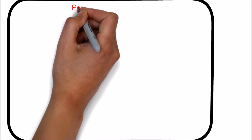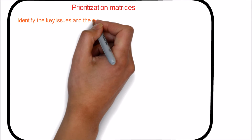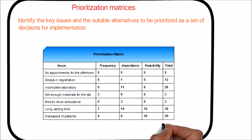Next technique is Prioritized Matrices. This technique is used to identify the key issues and suitable alternatives to be prioritized as a set of decisions for implementation. Let's take an example of increased customer dissatisfaction in a healthcare setup. To find out the major issue to prioritize, each possible cause is enumerated along with weighted frequency, importance, and feasibility. Then based on the total score, each issue is prioritized.